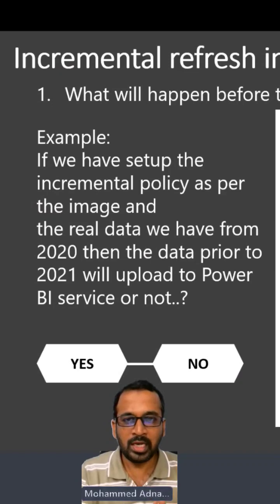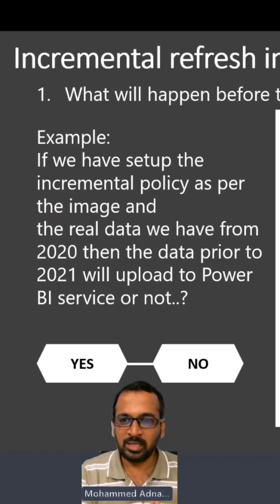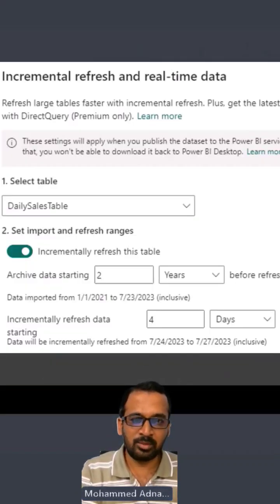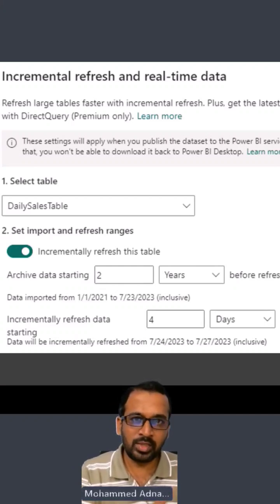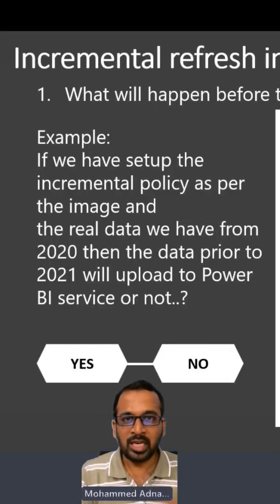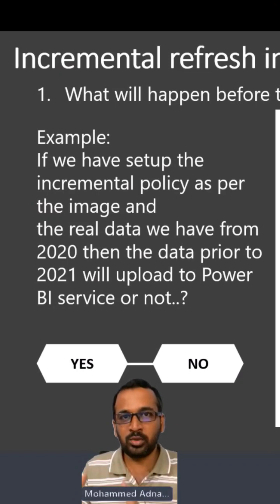So, for example, what will happen before the start date from the incremental policy? If you have set up the incremental policy as per the image — which is archived data starting from two years from now, from 1st of January 2021 till date, and incrementally refresh the data for the last four days — what will happen to the data if we have pre-2021 data?